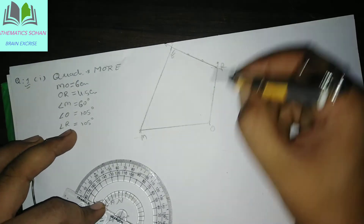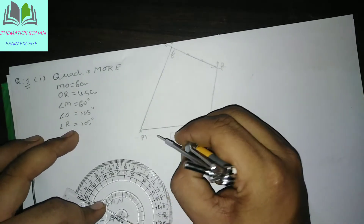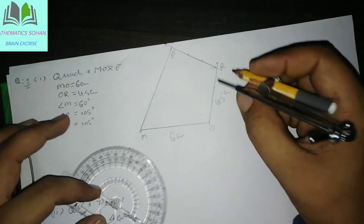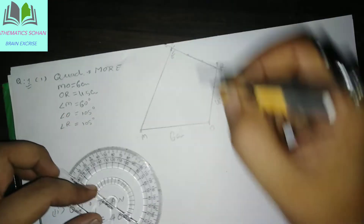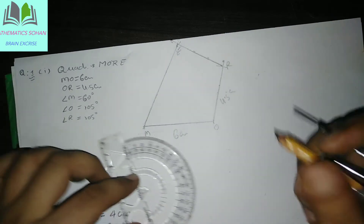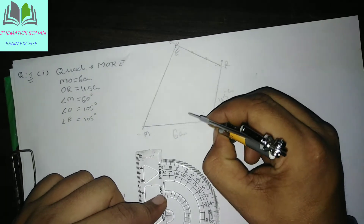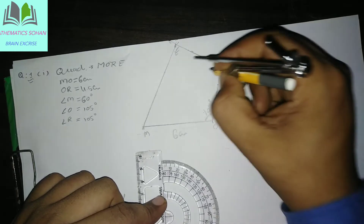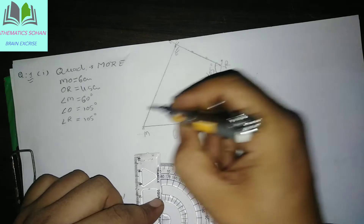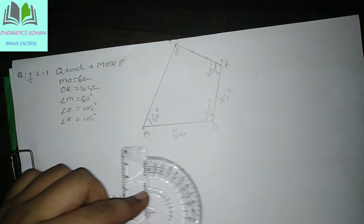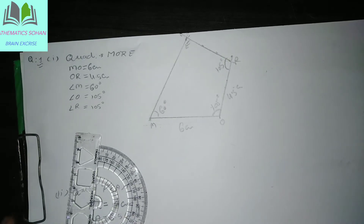Aur jahan pe yeh point milega woh point hamar yeh aa jayega. Yeh R tha hamar 6 cm aur yeh aaida 4.5 cm — jahan pe dono cut hue woh point mil gaya. Dono ki length aap check kar sakte hain. Angle aap measure kiya hai — humne yahan pe banaya 60 degree ka, yahan pe 105 degree, aur yeh angle 60 degree ka. Okay students, I hope you understand this construction step.